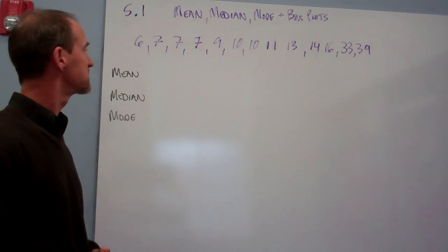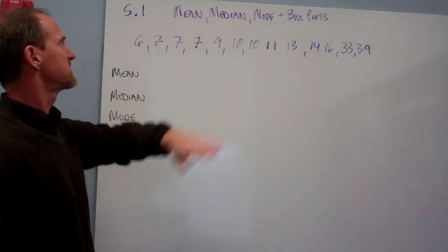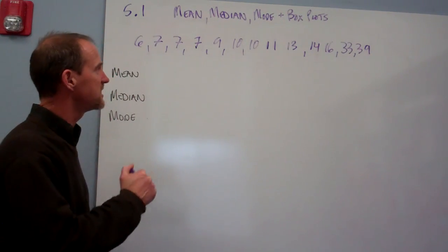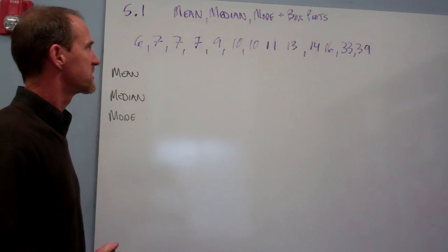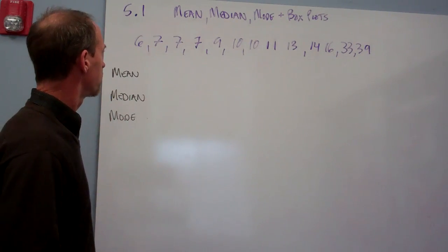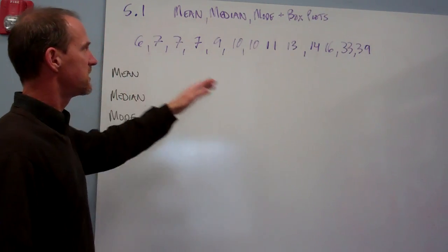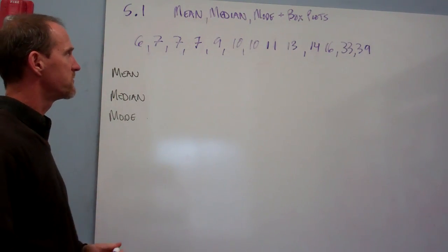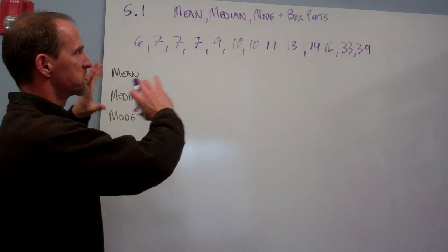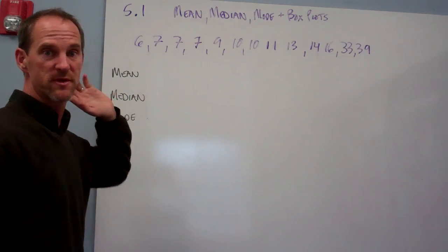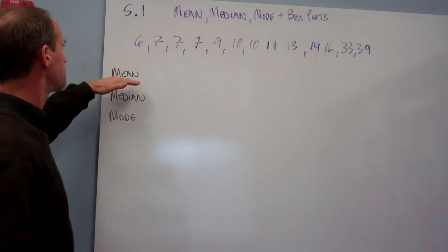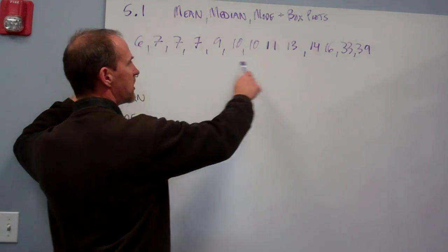Here's the data set representing the time it takes for 14 people to drive to their nearest bookstore, rounded to the nearest whole minute. I've done the simplification of putting them in order. If you get a data set that's just randomly dispersed, you want to maybe put them in order to help make sense of it, particularly when it comes to finding the middle value, the median.